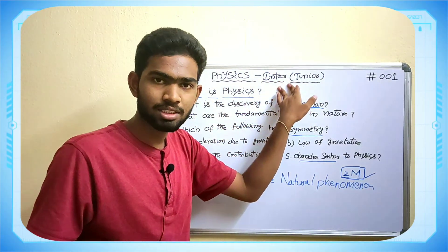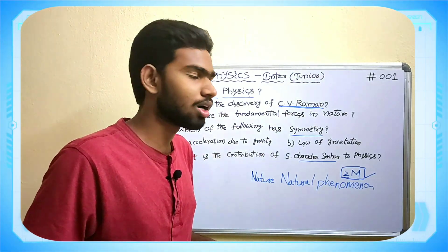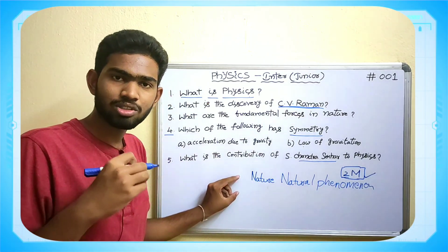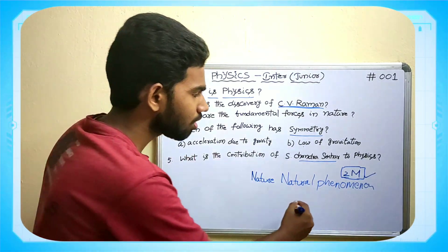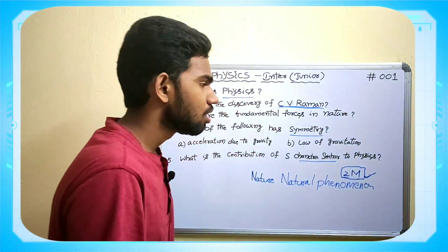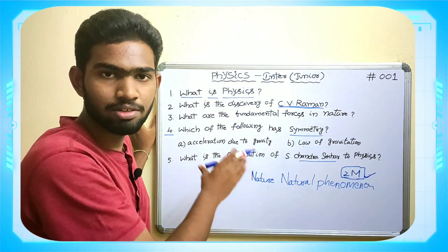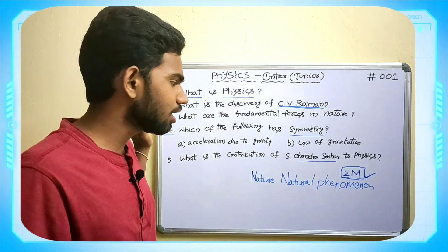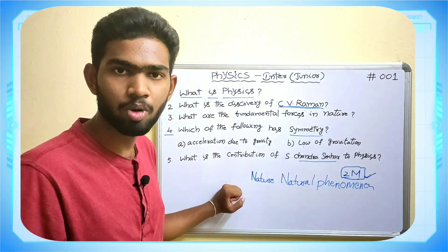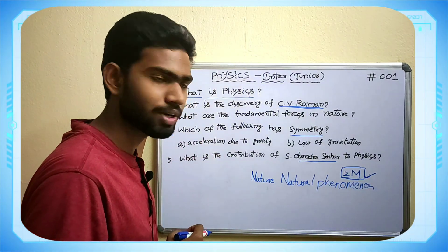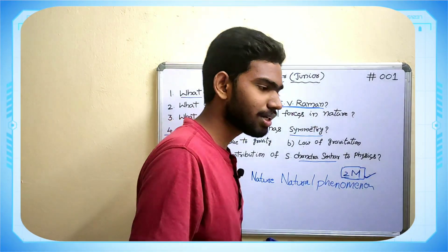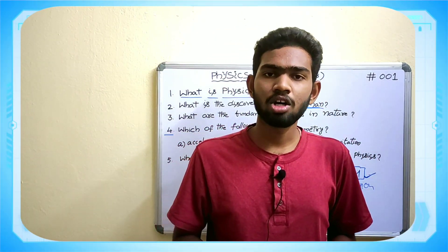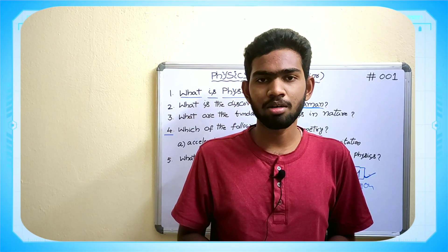In the intermediate first year physics examination paper, which is 60 marks, the first two-marks question is definitely carried by this lesson — Physical World. Among these five questions, you are guaranteed two marks. By learning these five questions, you have two marks in your pocket right now. Thank you friends — please like, share, and comment any doubts in the comment section.